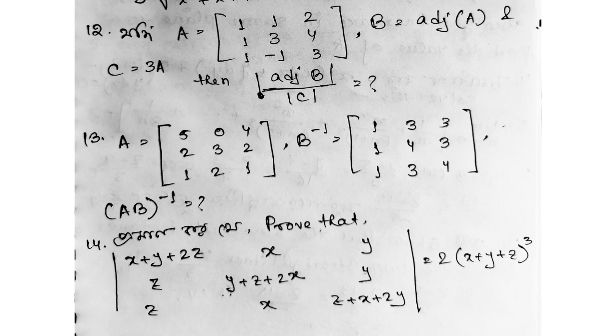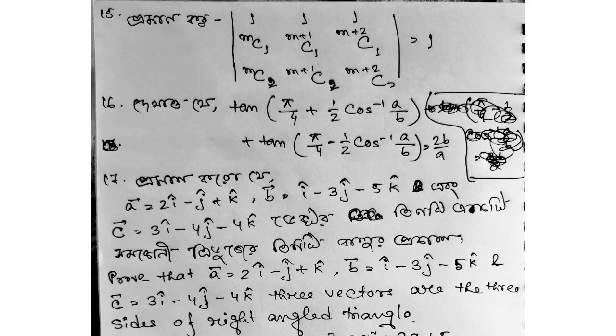Prove that determinant X plus Y, X plus Y plus 2Z, Z, Y plus Z plus 2X, Y, Z, X, Z plus X plus 2Y equals 2 into X plus Y plus Z whole cube. This is a determinant proof question.